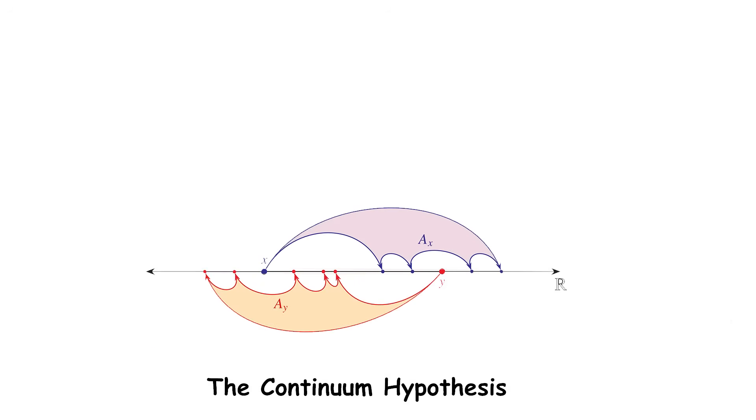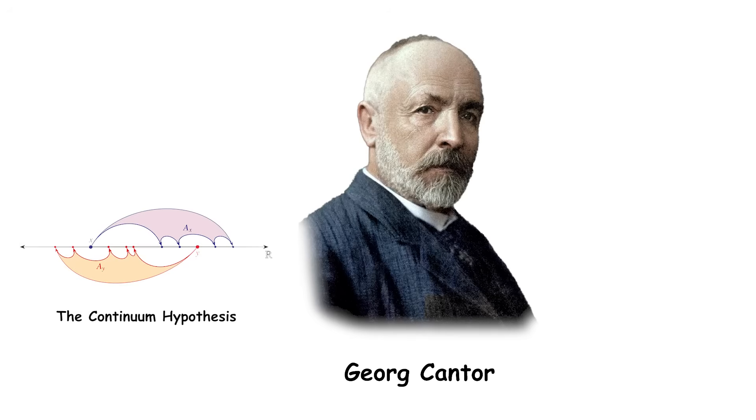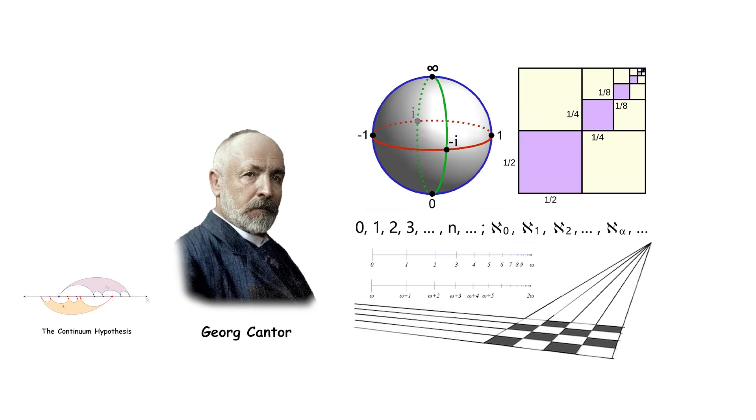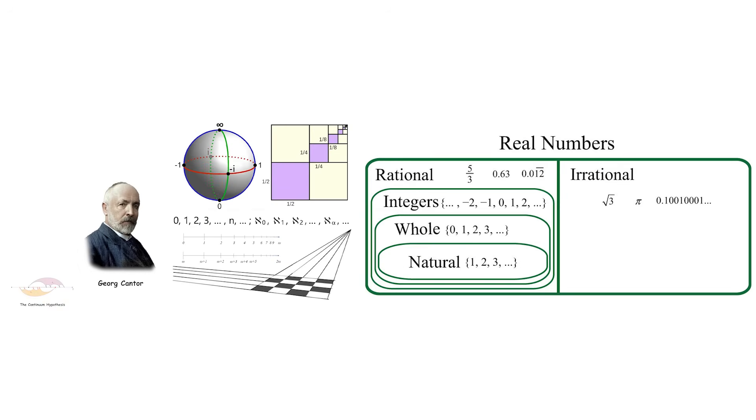The Continuum Hypothesis. In the late 1800s, a mathematician named George Cantor made an amazing discovery about infinity. He showed that there are different sizes or cardinalities of infinity. Cantor proved that the set of real numbers is larger than the set of natural numbers. The size of the natural numbers, 1, 2, 3, etc., is the smallest infinite size.